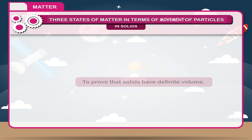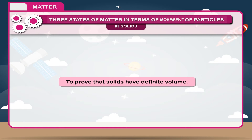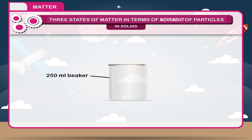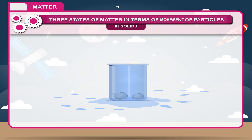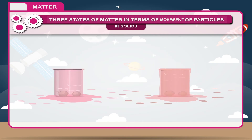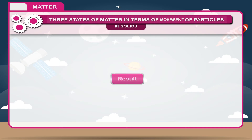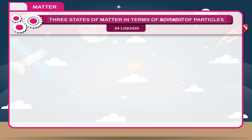Activity: To prove that solids have definite volume. Take a 250 ml beaker filled with water up to the brim and drop a stone into it. Note the volume of water that has overflowed. Repeat the experiment taking different liquids and different containers. The same volume of liquid is displaced in all cases. Result: solid stone has definite volume.